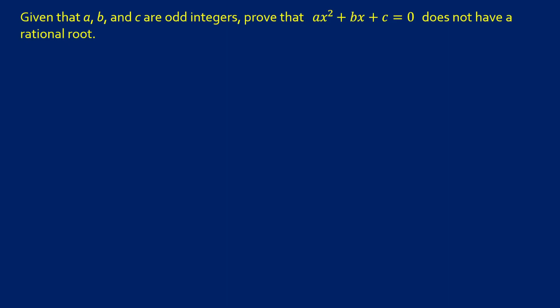We have a challenging proof today. Given that a, b, and c are odd integers, we want to prove that ax squared plus bx plus c equals 0 does not have a rational root.